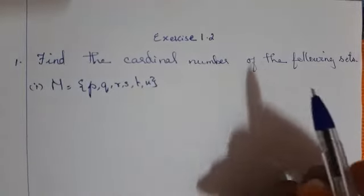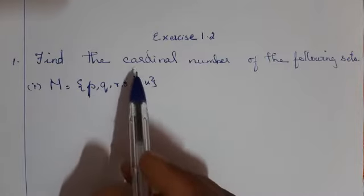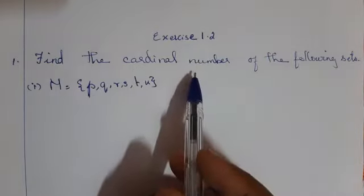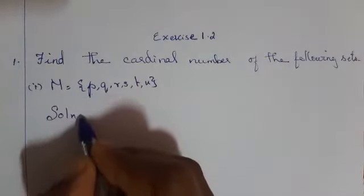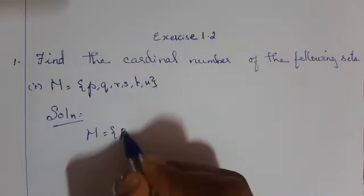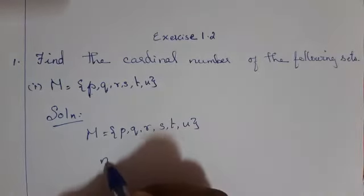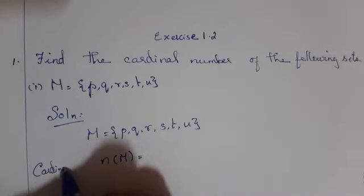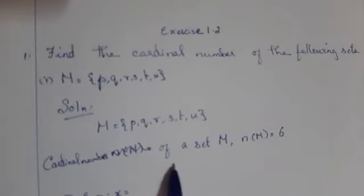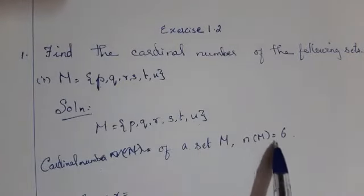Find the cardinal number of the following sets. First question: capital M is equal to {P, Q, R, S, T, U}. To find the cardinal number, count the elements and write. N of capital M is equal to 6 — 1, 2, 3, 4, 5, 6. Therefore, N of M is equal to 6.